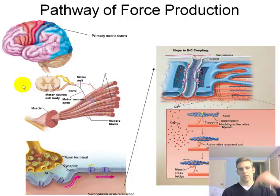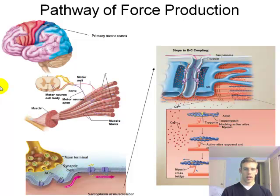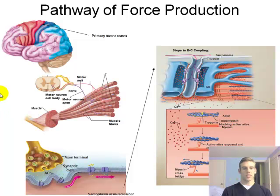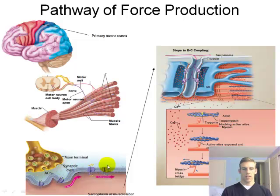Continuing down the pathway of force production, we can see where the neuron meets the muscle in the bottom left of the screen. This is called the neuromuscular junction, or NMJ. At the NMJ, the neuron releases acetylcholine, represented as ACh, which causes another action potential that travels down the outside of the muscle — down the sarcolemma.